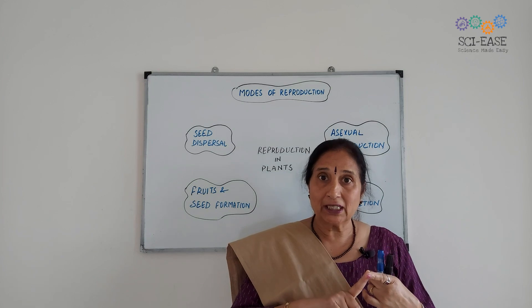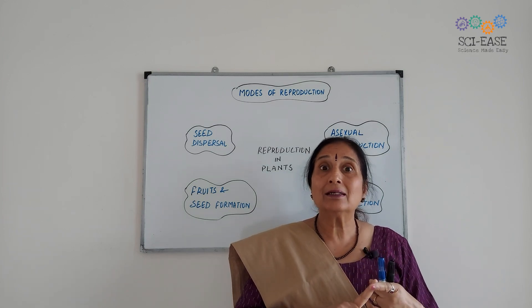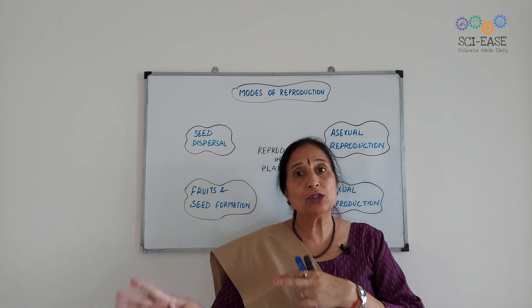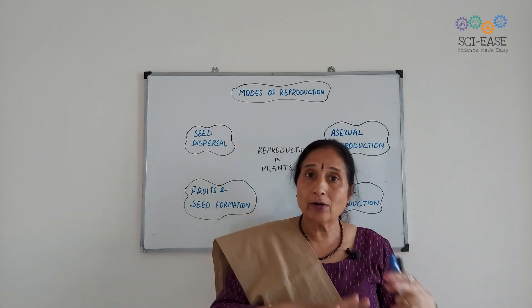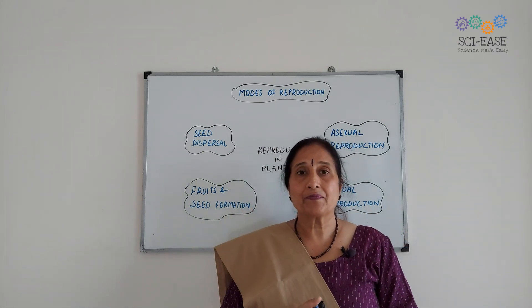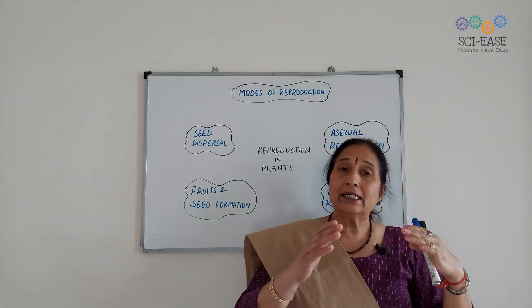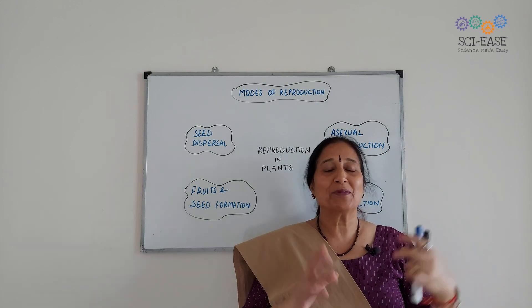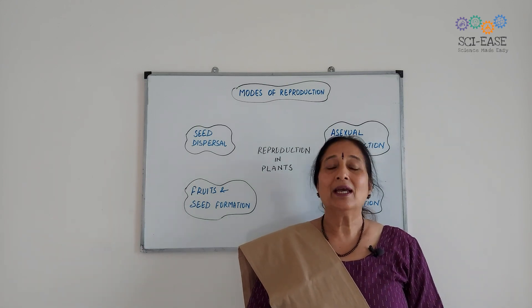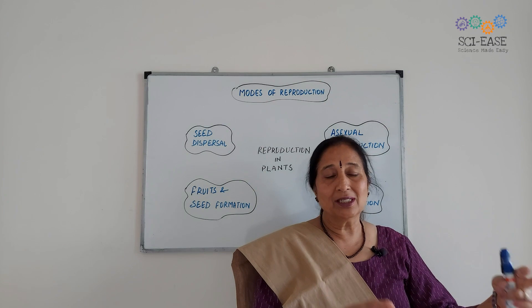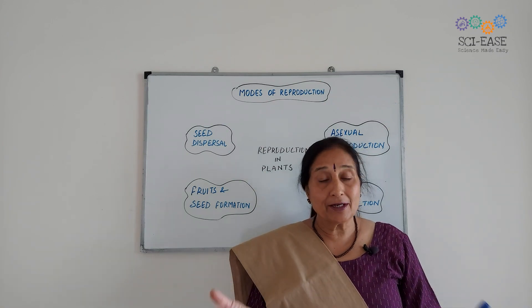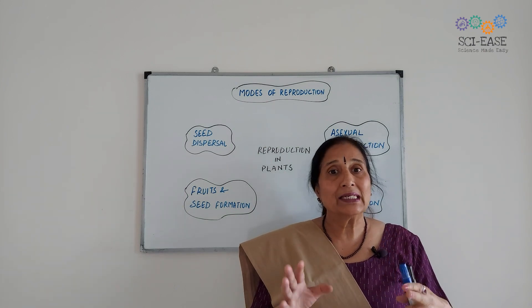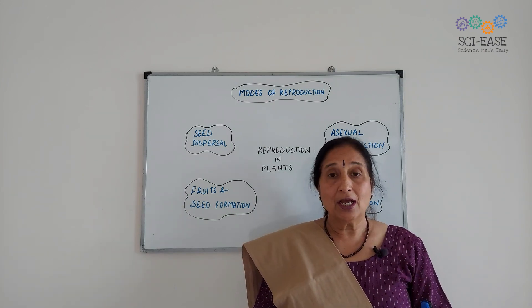Aap ko pata hai ke agar billi jo hai — cat — it will give birth to a kitten. Dog will give birth to a puppy. In the same way, reproduction happens in plants too. Like in animals, we know that there is reproduction; in plants also, there is reproduction.